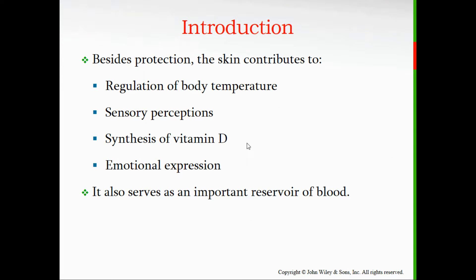What does the skin do for you, other than protection? It helps regulate body temperature — the fat in the subcutaneous layer insulates you, and blood vessels in your skin will dilate when you need to cool down, letting blood get close to the surface to radiate heat. They also constrict when you're cold to keep blood from going to the surface. The sensors in your skin allow the perception of touch, temperature changes, and pain — letting you know to move away from whatever's causing harm.